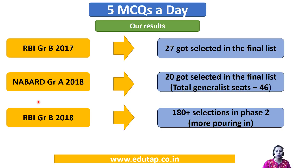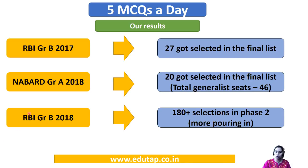Let me quickly tell you about our results. We have been working in this field for quite some time and have been blessed with brilliant results. In RBI Grade B 2017, 27 of our students were selected in the final list. In NABARD Grade A 2018, out of 46 generalist seats, 20 were taken by EduTapians. And in RBI Grade B 2018, we have got confirmations from 180 plus students who have been selected in phase 2, with even more pouring in.